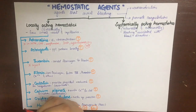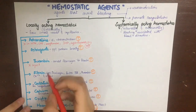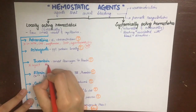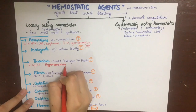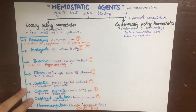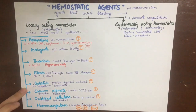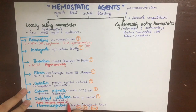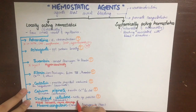Regarding side effects of locally acting hemostatics: thrombin will cause hypersensitivity reactions, while oxidized cellulose will cause tissue necrosis, nerve damage, and vascular stenosis.